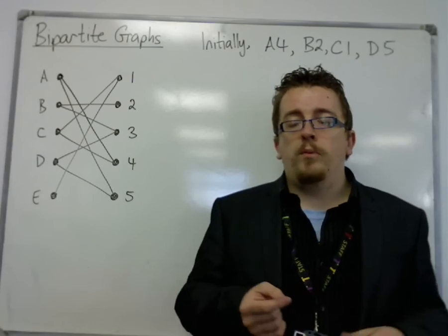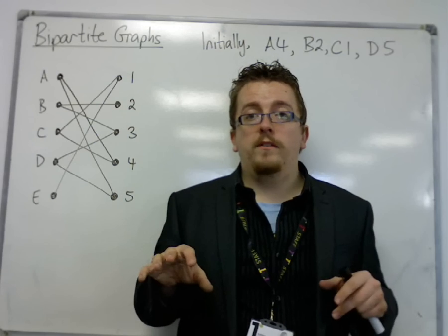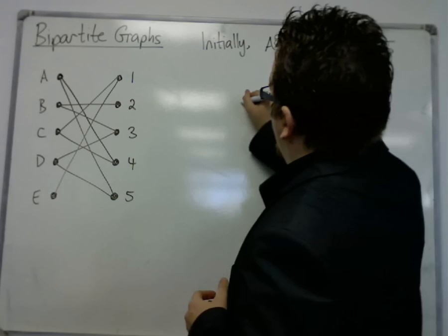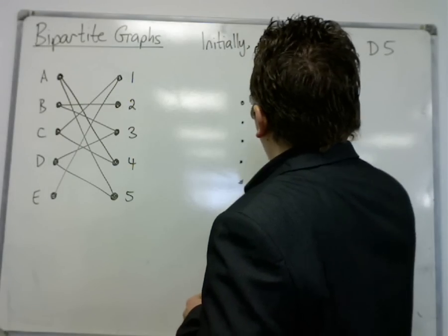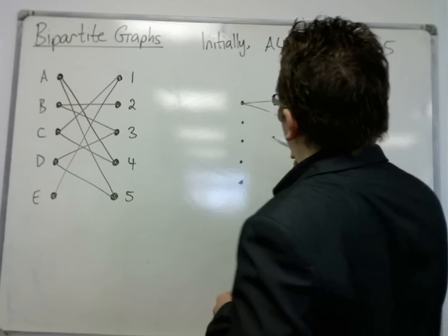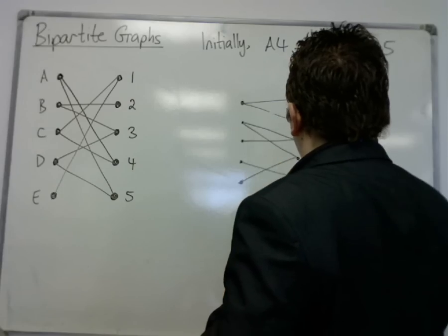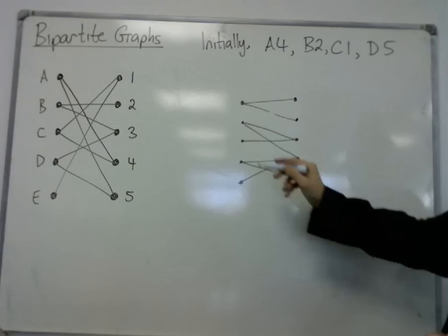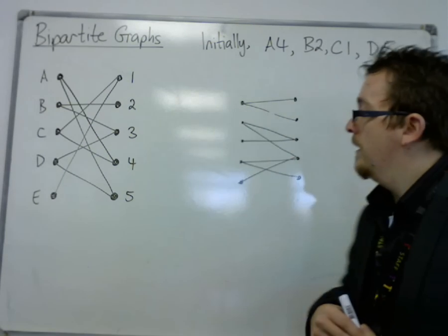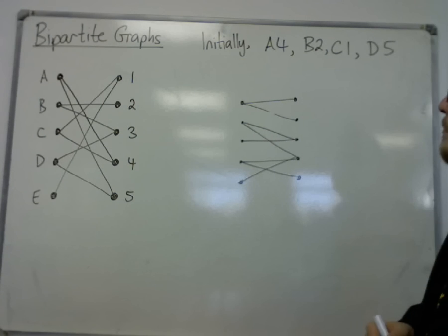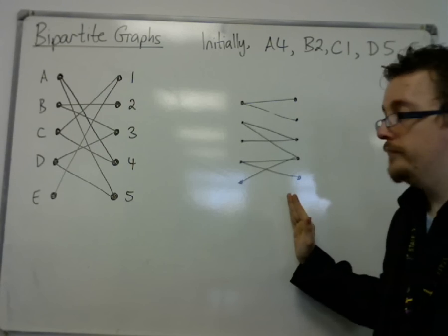but one of the employees knows how to do two of the tasks, and that's it. So you could have a situation where you had your five people, five tasks, and this employee knows how to do those two tasks, and the rest are like this. The rest of the workers know how to do these three tasks, but there's one worker that only knows how to do those two tasks. So in this case, there can't be a complete matching, even though you have five employees and five tasks.